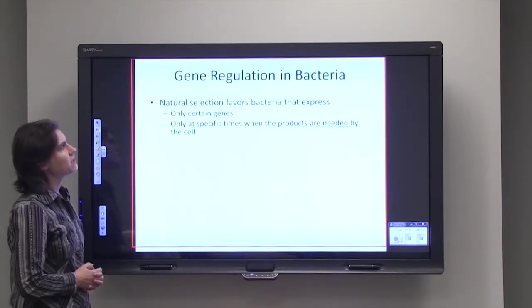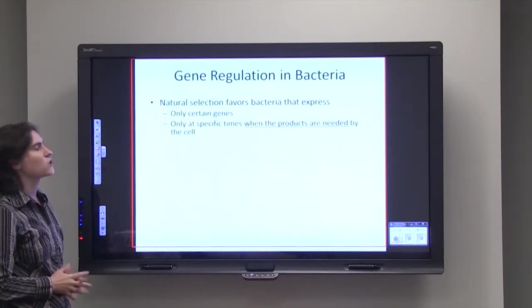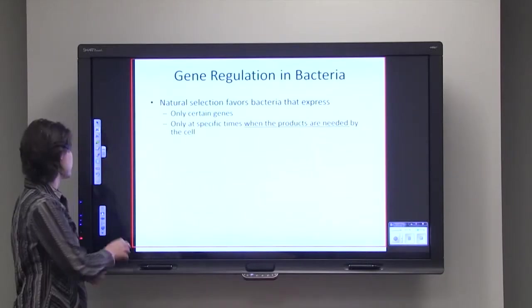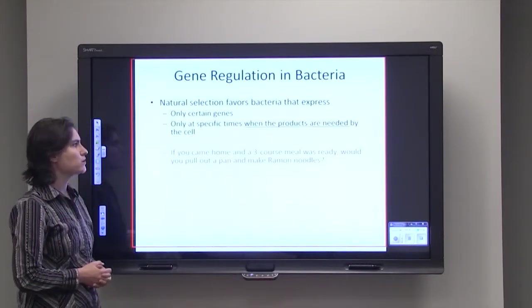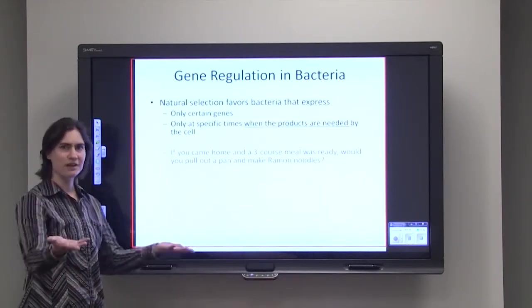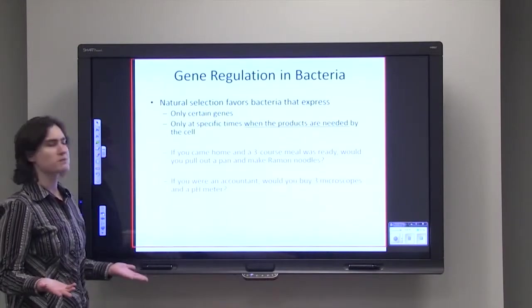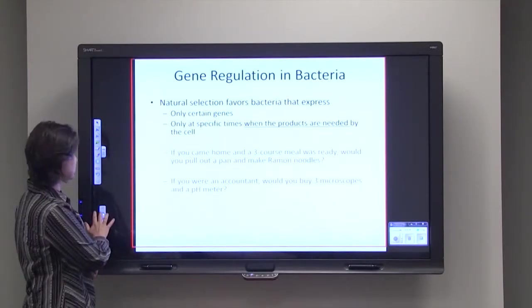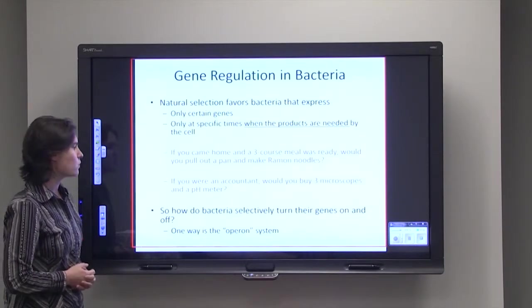Let's first start by talking about gene regulation in bacteria. Natural selection tends to favor bacteria that express only certain kinds of genes, only at specific times whenever the products are needed by the cell. For example, if you came home and there was a three-course meal ready sitting on the kitchen table, would you pull out a pan and start making ramen noodles? No, you already got food ready. Or if you were an accountant, would you buy three microscopes and a pH meter? No, it's not something that you need for your particular job. Same thing with the cells. So how do bacteria selectively turn their genes on or turn their genes off?